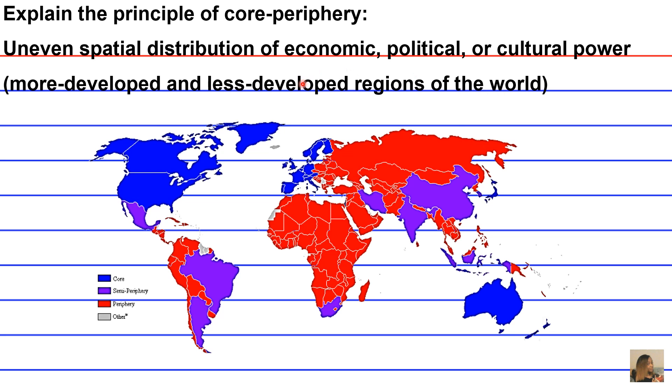And here goes a map that depicts the different countries of the world according to whether they're classified as core, semi-periphery, periphery, or other.